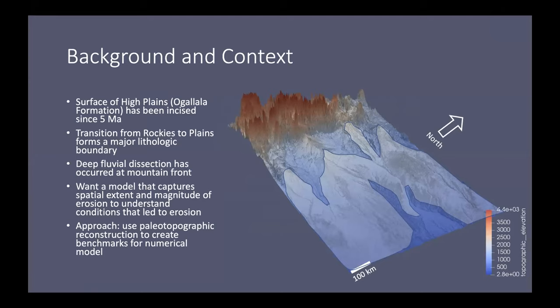So the high red peaks are the southern Rocky Mountains in Colorado and as you move to the north and lose some elevation you're moving into Wyoming. The sharp break in slope that you can see is the area that I'll be referring to as the mountain front throughout this presentation. And this broad flat surface to the east are the High Plains.